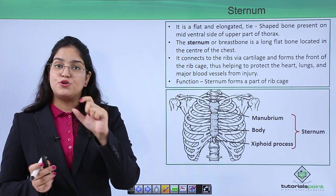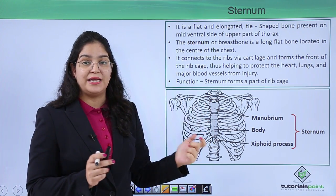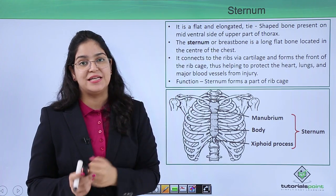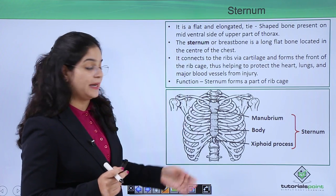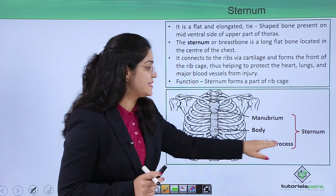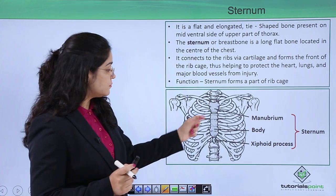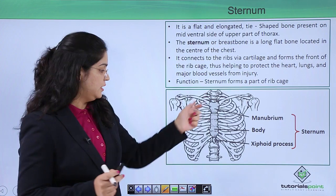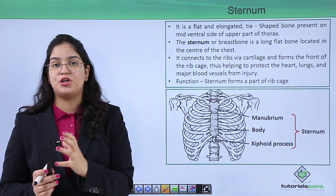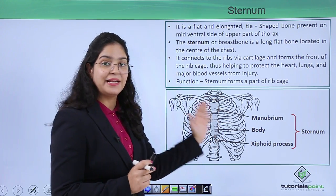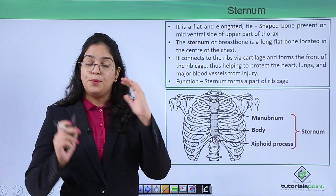Now let's learn about the structure of the sternum. The tie-shaped middle portion between our ribs is called the sternum. Although it is a small structure, it is very important because the ribs connect to it, completing the rib cage. The sternum has three main parts: the manubrium, the body, and the xiphoid process. The sternum is located in the middle of the chest on the ventral side, and its main function is to complete the rib cage and maintain proper balance among all the ribs.